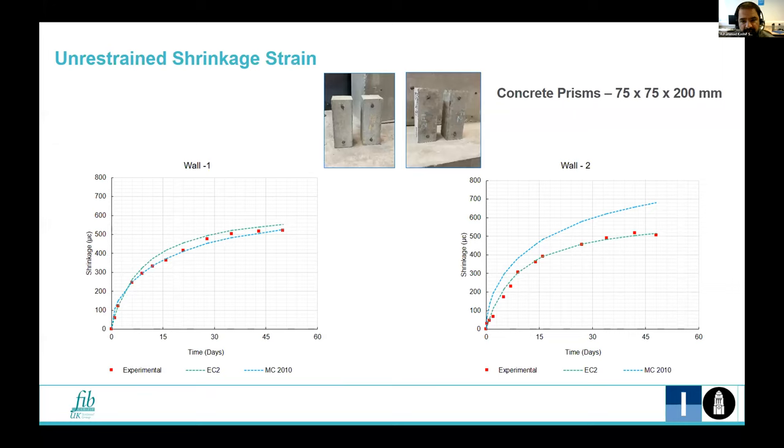In order to determine the magnitude of free strain which the wall would exhibit, we need to know the thermal and shrinkage strains both. Unrestrained or free shrinkage is monitored using concrete prisms cast from each batch of concrete and placed in the same environmental conditions as those of the wall and slab.